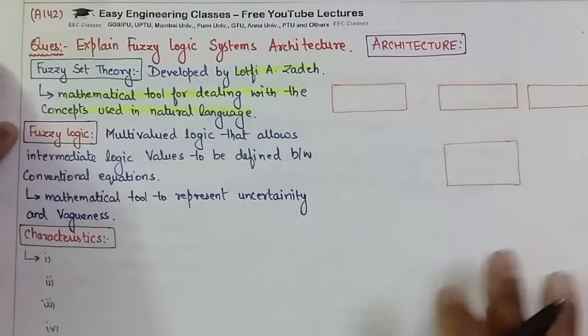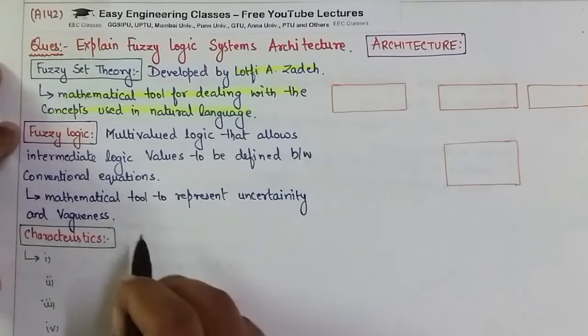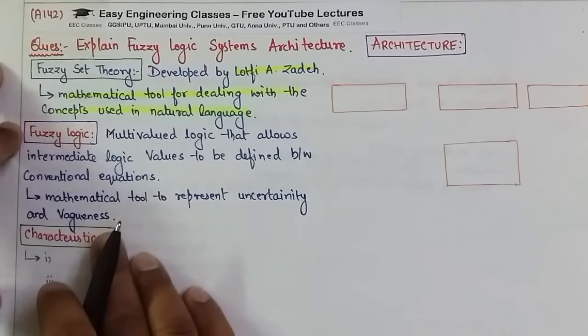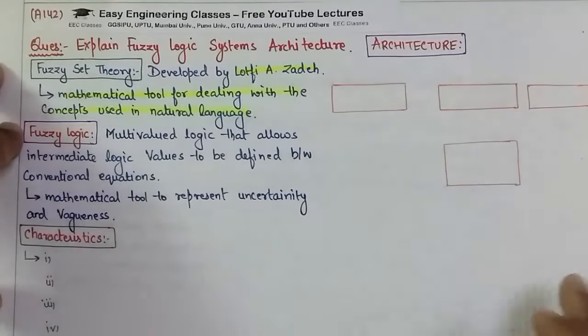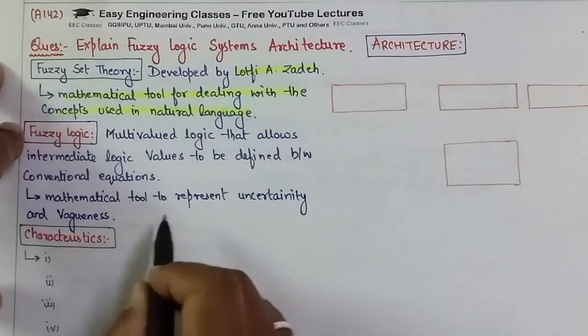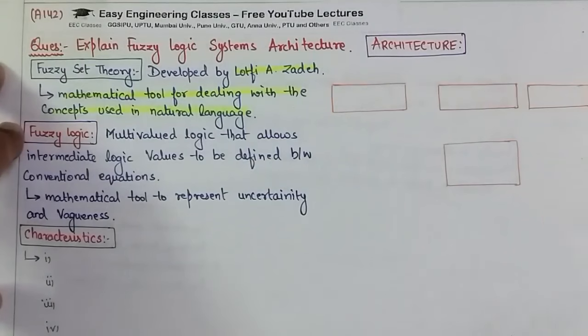It is a tool to represent uncertainty and vagueness. Just like we are saying that this can be so good or it was so bad. So there is an uncertainty that it is good or not or bad or not and it is a vagueness.